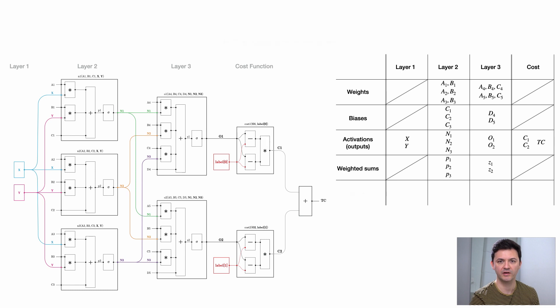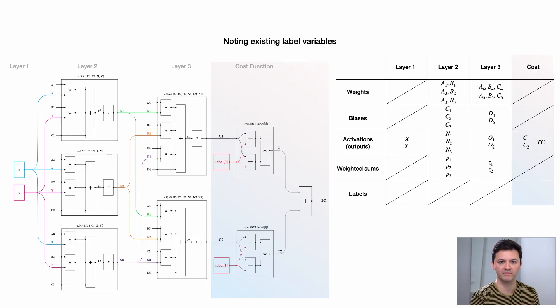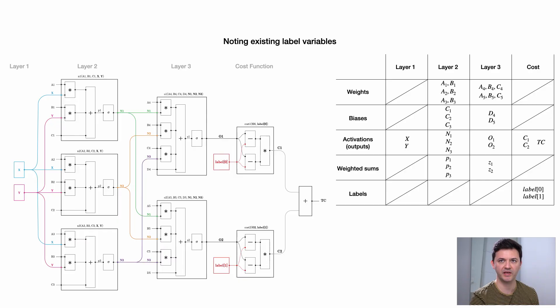This would be all the elements in our neural network. What we can realize now is that the way we named our elements was useful when computing forward and backward pass one by one, but in terms of structure it's not ideal. The weights use A's, B's, C's; biases use C's and D's; activations use X, Y, N1, N2, O1, O2, C1; and weighted sums use P's and Z's. We need to name our elements appropriately according to the function they play in the neural network.